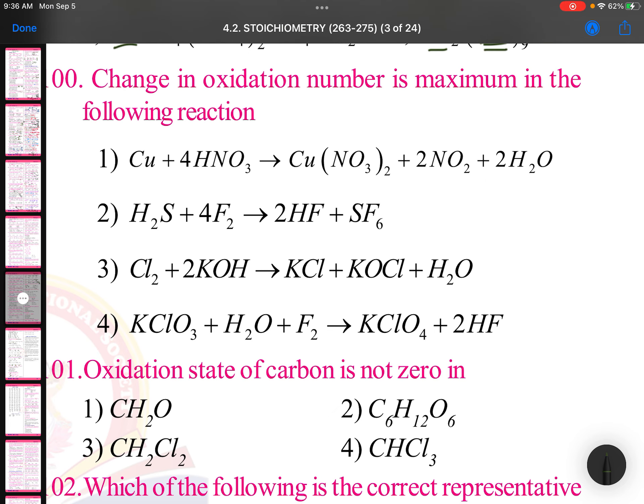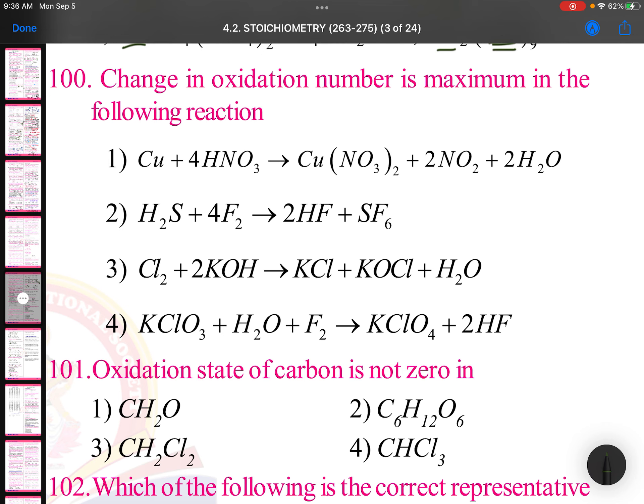Change in oxidation number is maximum in the following reaction. Copper 0 changes to copper plus 2. In HNO3, nitrogen plus 5 changes to NO2 plus 4. H2S: sulfur minus 2 changes to SF6 sulfur plus 6. I think this is maximum. Minus 2 to plus 6 means change is 8.